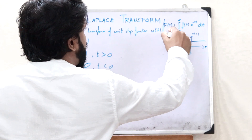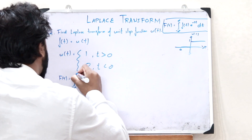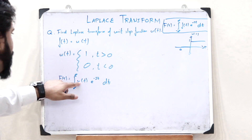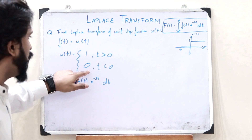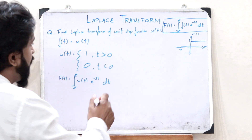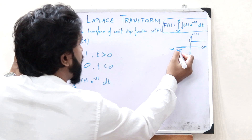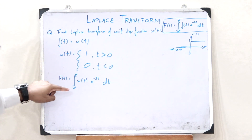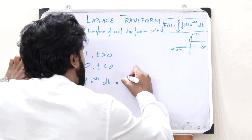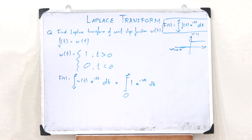By applying the formula of a Laplace Transform, we get F of S equal to the integral from minus infinity to infinity of U of t into e raised to minus S T, d T. Since U of t equals 0 when t is less than 0, from minus infinity to 0 the value of U of t is 0, so that portion of the integral is also 0. Therefore this expression becomes F of S equal to the integral from 0 to infinity of 1 into e raised to minus S T, d T.